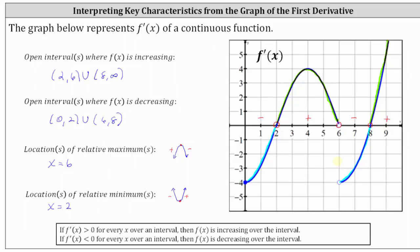Finally, notice how the derivative changes from negative to positive at x equals 8, which means f of x changes from decreasing to increasing. f of x has a relative minimum at x equals 8.